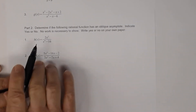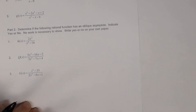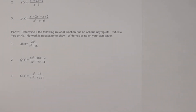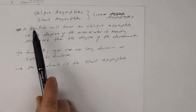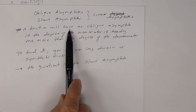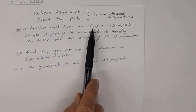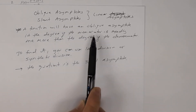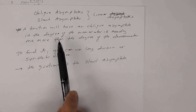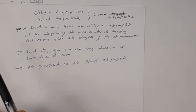Now let's look at Part 2, which asks you to determine if each rational function has an oblique asymptote — indicate yes or no, no work necessary. But you still need to understand what you're doing. Remember, a function will have an oblique or slant asymptote if the degree of the numerator is exactly one more than the degree of the denominator.